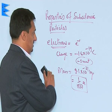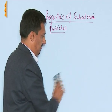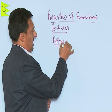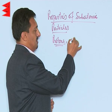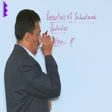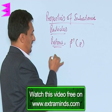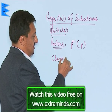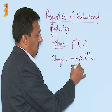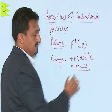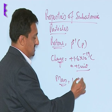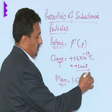Let us talk about protons. Protons are given the symbol P⁺, or we simply call them P. The charge on these particles is plus 1.6 × 10⁻¹⁹ coulombs, which is also called plus 1 unit charge, and their mass is exactly 1.67 × 10⁻²⁷ kg.